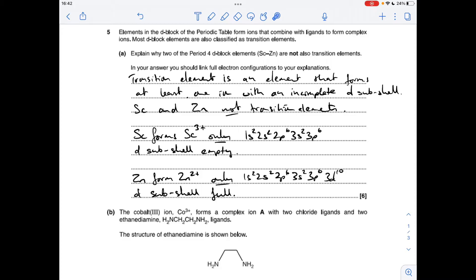Zinc only forms the two plus ion. There's its electron configuration, and you'll see that its D subshell is full. So neither of these fulfill this criteria that it needs to form an ion with an incomplete D subshell.